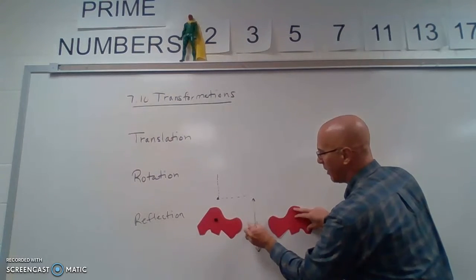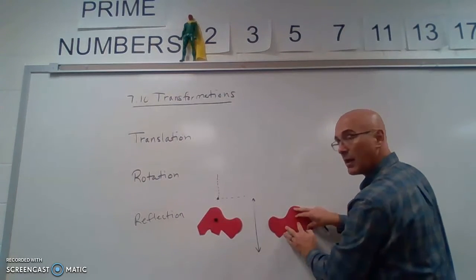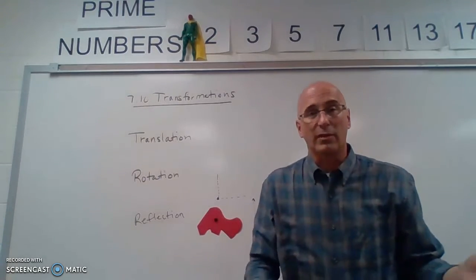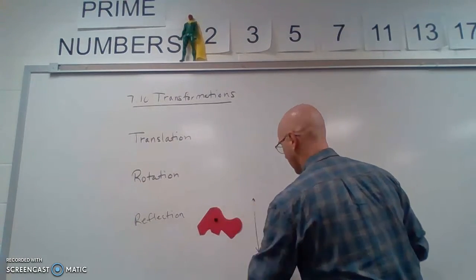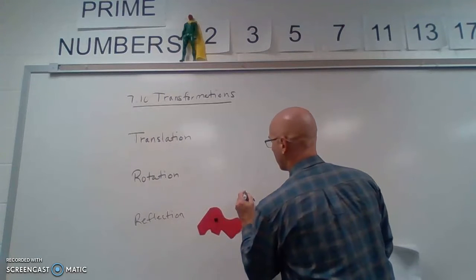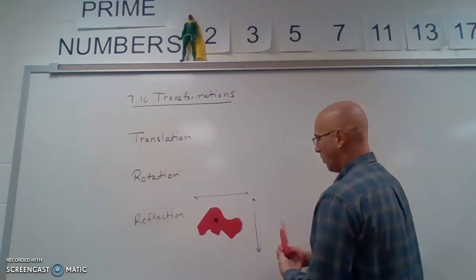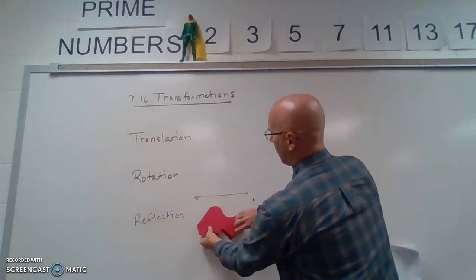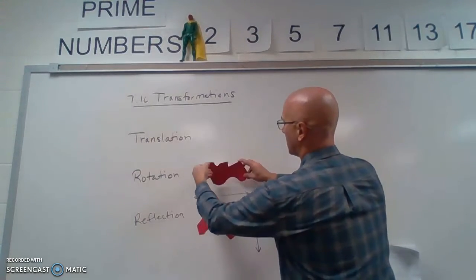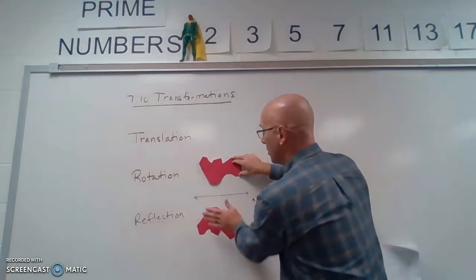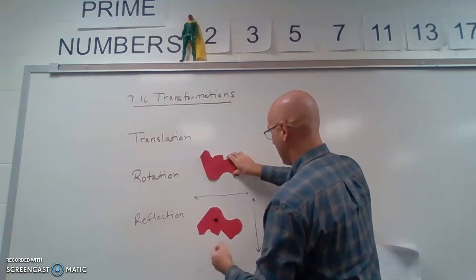You can see how it's the same distance from that line of reflection. Now you can have any number of lines of reflection. You could have a line of reflection up here. And when we take this and we reflect it over, we would see that it just inverts itself or turns itself upside down. You could do it below, you can do it on any angle.